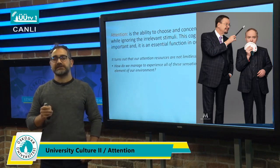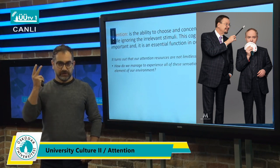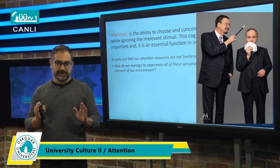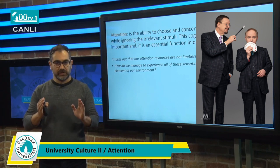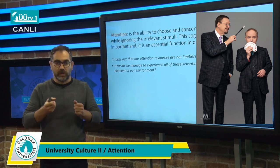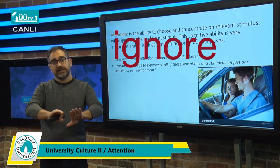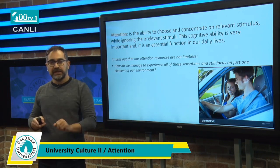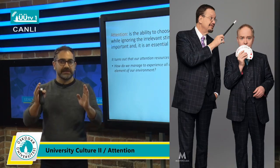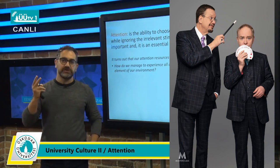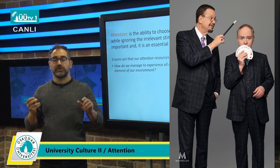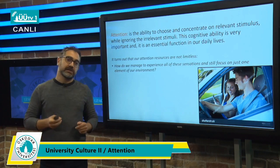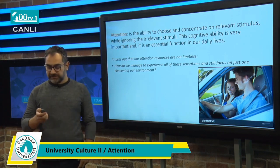How do illusionists make their performances? Two fundamental things. Number one, they use our limited attention capacity to trick us. Number two, quick hands — their hands are so quick that we cannot catch them. So these are some proofs showing our limited attention capacity.